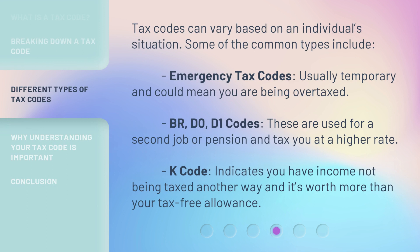Tax codes can vary based on an individual's situation. Some of the common types include: Emergency tax codes, usually temporary and could mean you are being overtaxed. BR, D, D0, and D1 codes, which are used for a second job or pension and tax you at a higher rate. K code, which indicates you have income not being taxed another way and it's worth more than your tax-free allowance.